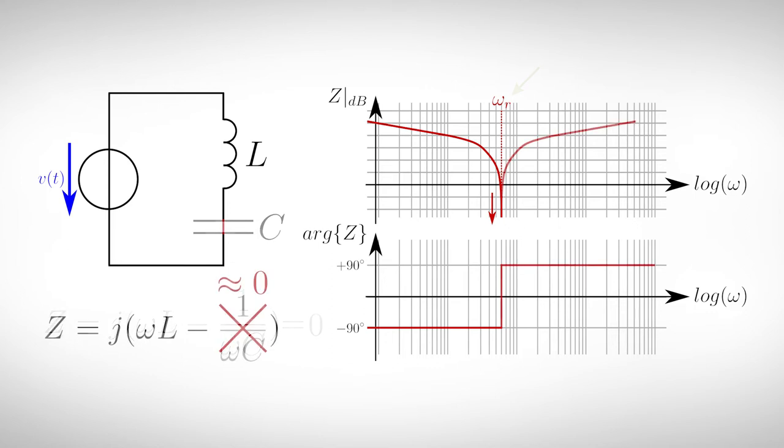If the frequency is increased further, the impedance of the inductor will prevail. The total impedance rises again because of the inductor's impedance and the whole circuit now acts like an inductor. The current is now lagging behind the voltage by 90 degrees. Notice that at the resonance frequency, the phase shift between current and voltage jumps by 180 degrees.